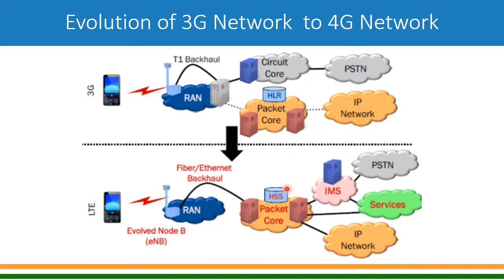When it evolved to 4G, the circuit core was removed and only the packet core remained. HLR was renamed as HSS, Home Subscriber Server. Even voice calls, which earlier were handled in the circuit core, are now handled in the packet core itself — for that you need a separate network node called IMS. IMS enables voice call on the 4G network, which is why we call it Voice over LTE, and it is completely IP voice.